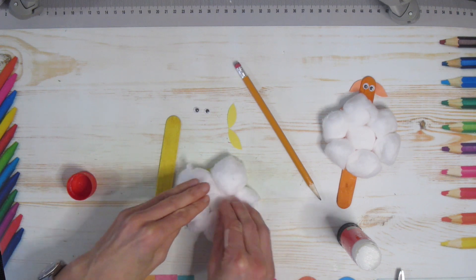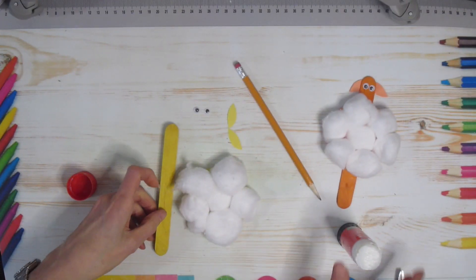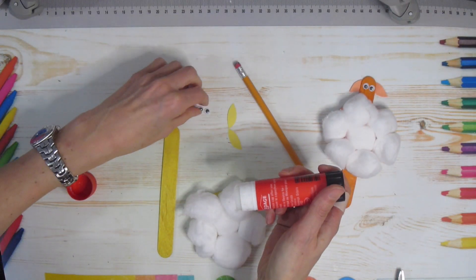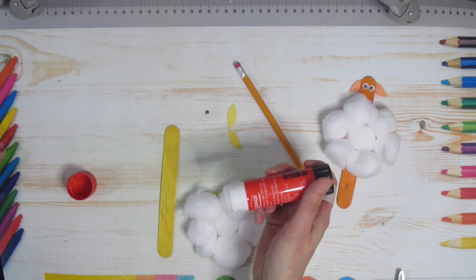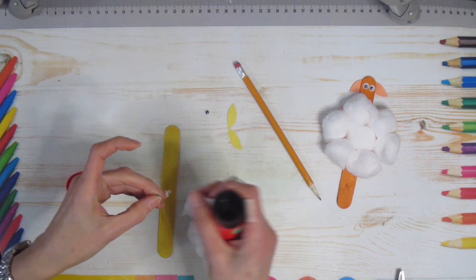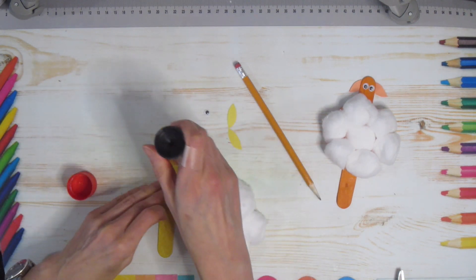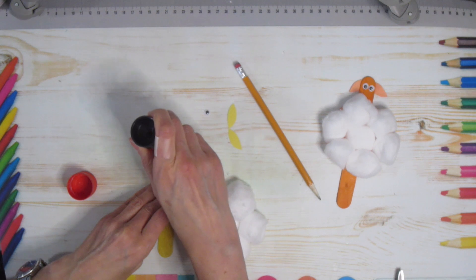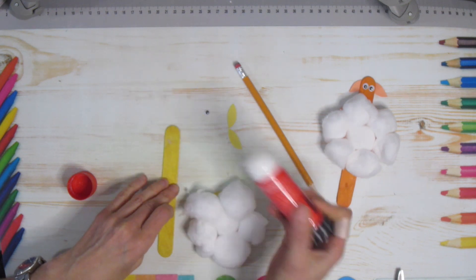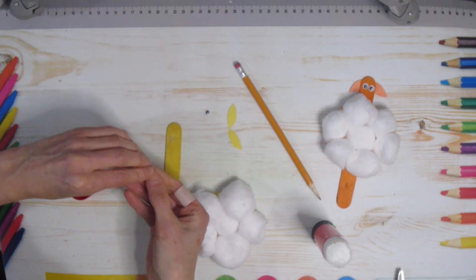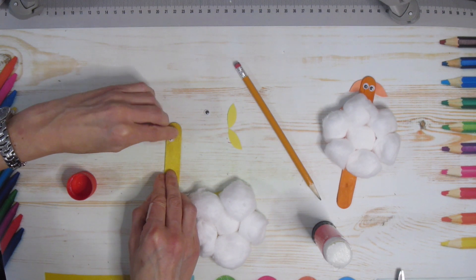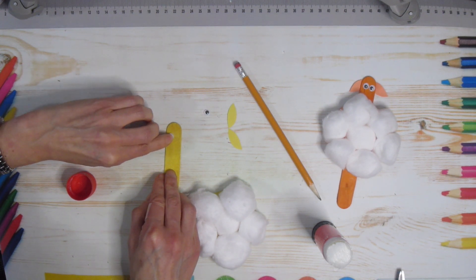They're nice and fluffy, then what I'm going to do is take my eyes and glue those on. I find these sometimes get stuck to my fingers, you can see there's already glue there from the cotton ball so rather than put glue on the back of the eye I find if I just put a little bit of glue right on my stick that that seems to work better. So I'm going to do that, I'm putting a little bit of glue there, you do what works for you.